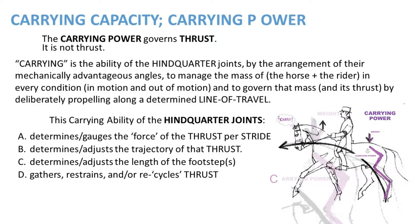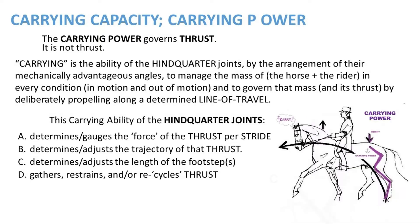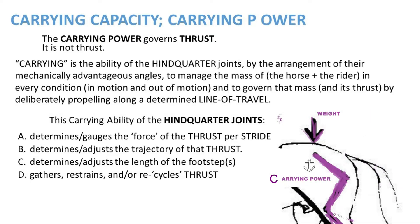Carrying is the ability of the hindquarters joints, by the arrangement of their mechanically advantageous angles, to manage the mass of the horse plus the rider in every condition — in motion and out of motion — and to govern that mass and its thrust by deliberately propelling along a determined line of travel. The carrying power governs thrust; it is not thrust. This carrying ability of the hindquarters joints: A, determines the force of the thrust per stride; B, determines and adjusts the trajectory of that thrust; C, determines and adjusts the length of the footsteps; and D, gathers, restrains, and/or recycles.